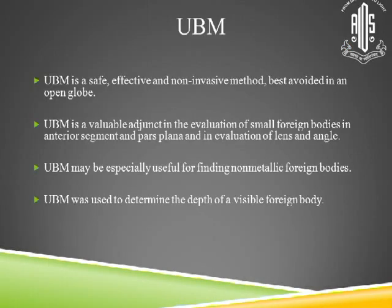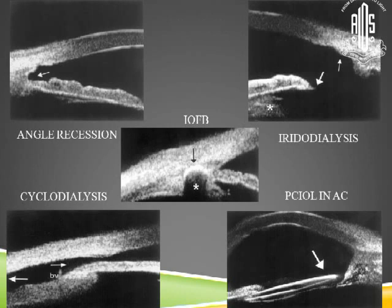After X-ray came UBM, which is very safe, effective, and non-invasive — best avoided in an open globe. It helps in evaluation of smaller foreign bodies in the anterior segment, gives an evaluation of the lens and angle, and is very useful for finding non-metallic foreign bodies. UBM features in trauma include angle recession, iridodialysis, intraocular foreign body seen as a hyperechoic shadow, cyclodialysis, and an IOL in the anterior chamber.